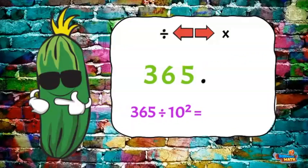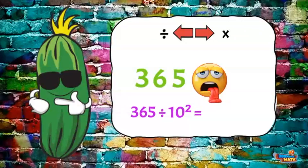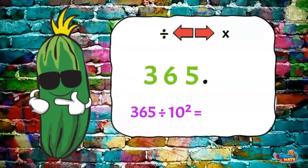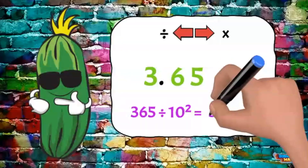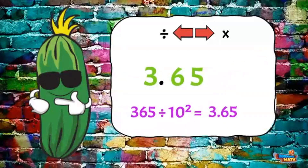Man, this decimal is moving a lot. One more, decimal man. 365 divided by 10 to the second power. 10 to the second power is equal to 100. When we divide by 100 we move the decimal two places to the left for a quotient of 3 and 65 hundredths.